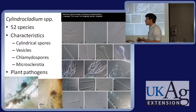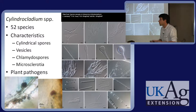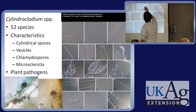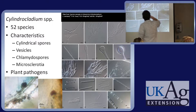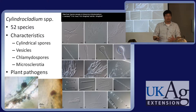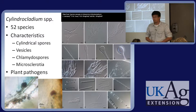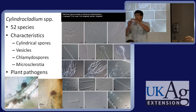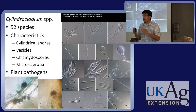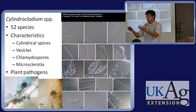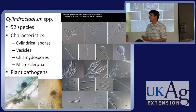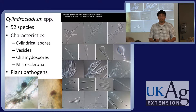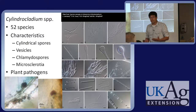Cylindrocladium species are well-known nursery pathogens, especially in container or small seedlings under heavy irrigation or overhead water. They're called cylindrocladium because they have cylindrical spores; they produce vesicles that are how the different species are identified and given their different names. They produce chlamydospores, which are resting spores that combine together to create mycosclerotia. This happens in plant tissue, so infected plant tissue falling to the ground can leave mycosclerotia that persist in the soil for as many as 15 years.